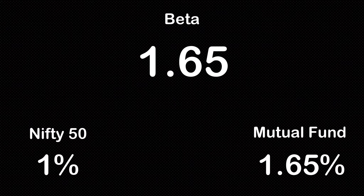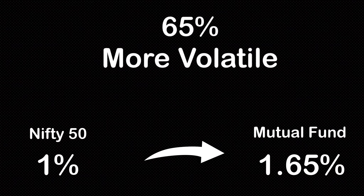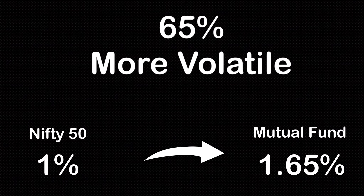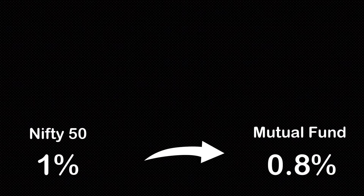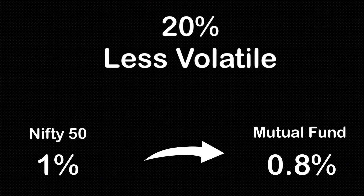To give an example, let's say a mutual fund has a Beta of 1.65. What this means is if the index — Nifty 50 or Sensex — changes by 1%, this fund would change by 1.65%, meaning this fund is 65% more volatile compared to the index. Similarly, if the Beta was 0.8, that would mean when the index changed by 1%, that particular fund would change by 0.8%, meaning it is 20% less volatile compared to the index.